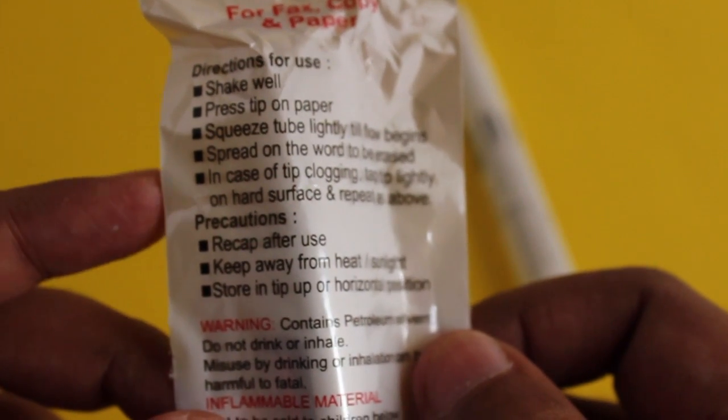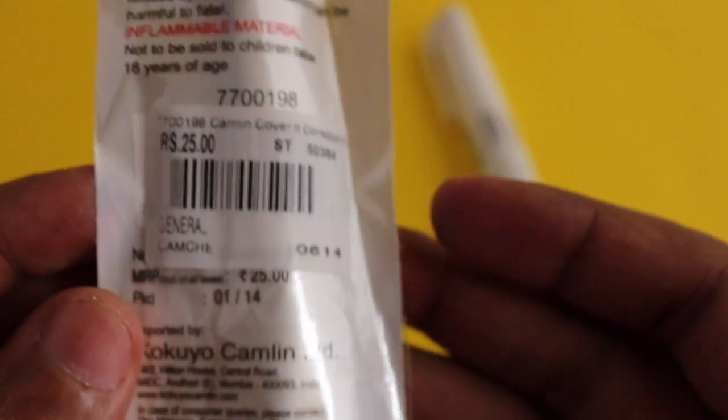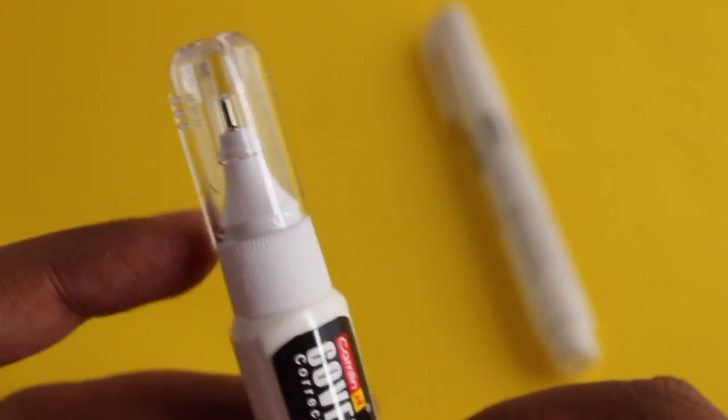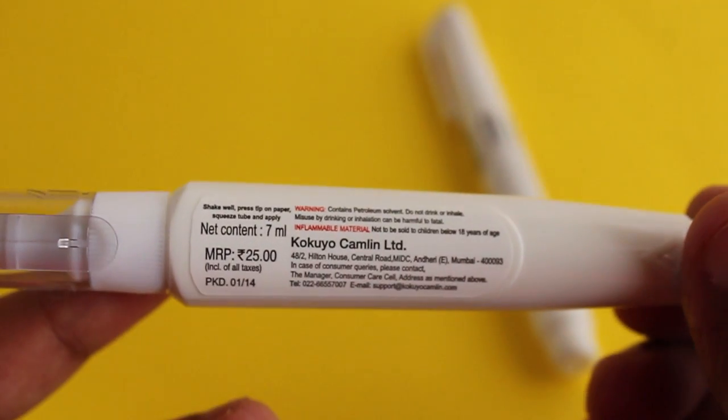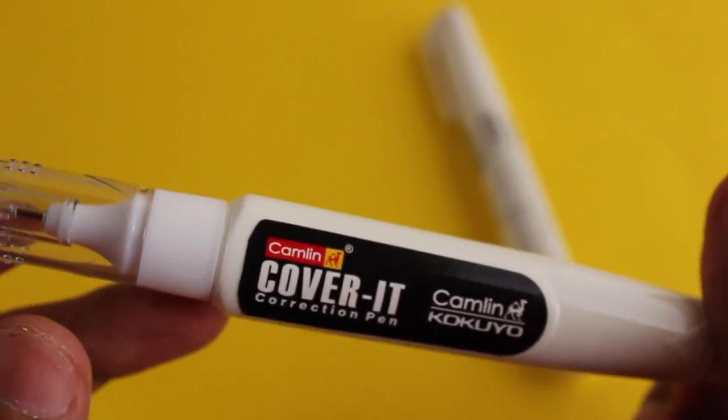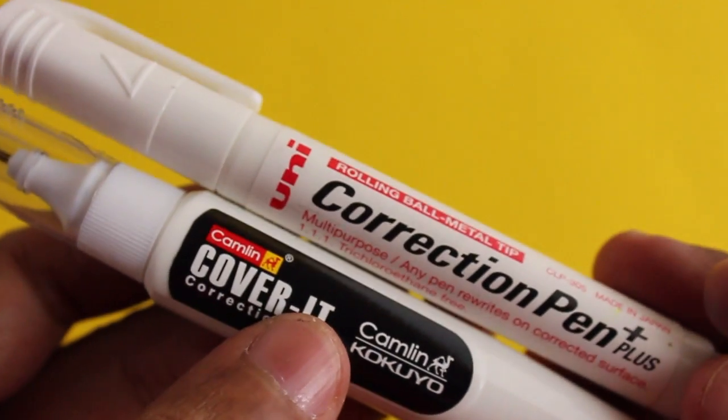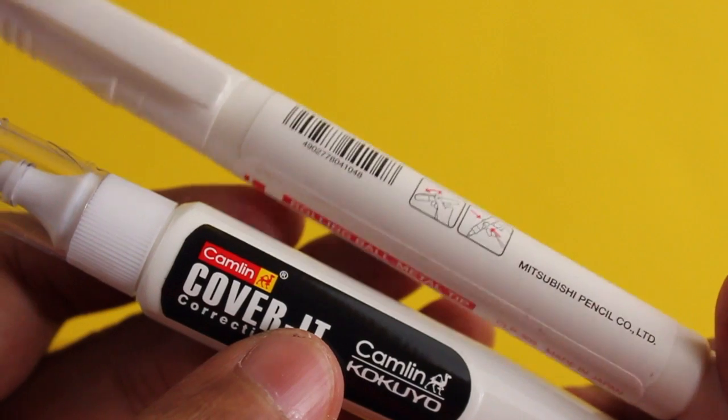Same features as the other one. They recommend you shake it before use. This feels quite a bit firmer than the other one. It has a transparent cap and is very nicely shaped so it's easier to hold. This one looks like a regular pen. Design-wise, I prefer the cheaper Camlin one.